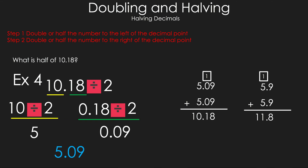To verify the answer, we can double it and check. Adding 5.09 to itself gives 10.18 — correct. However, adding 5.9 to itself gives 11.8, which is wrong. This shows why you need to be careful with numbers below 20 when dividing by 2, and why those two decimal places matter.